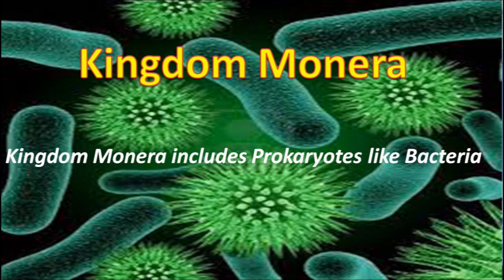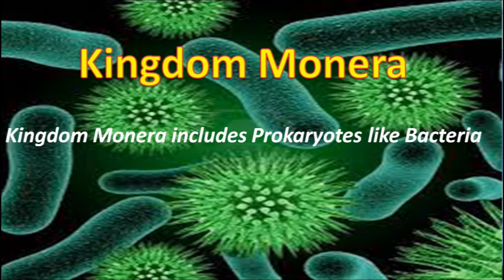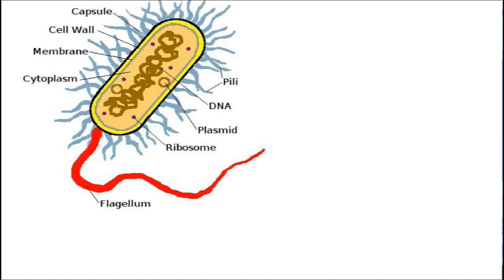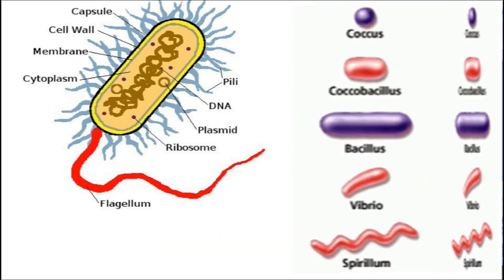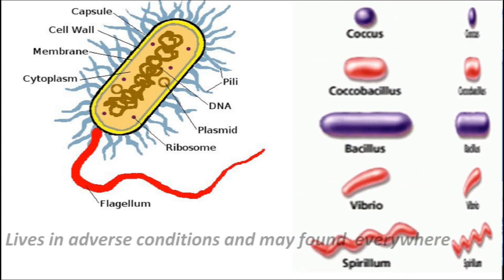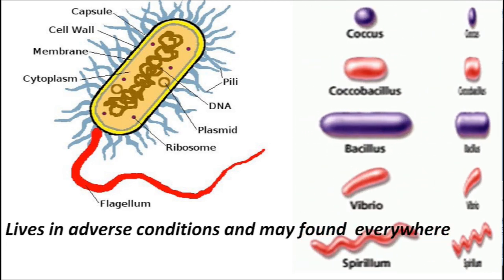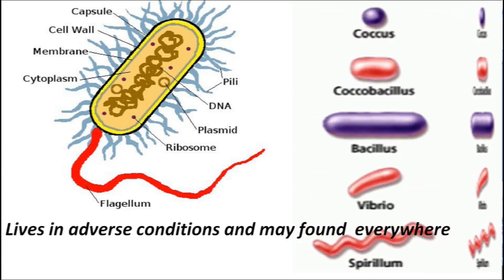Kingdom Monera includes prokaryotes like bacteria, or unicellular organisms in which the nucleus is not well developed. Prokaryotes have a simple cellular structure and no distinct nucleus. They can live in adverse conditions and may be found everywhere in the environment.